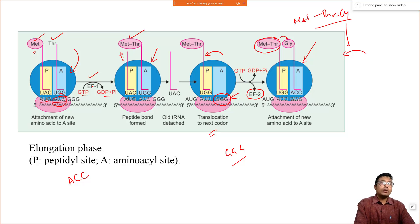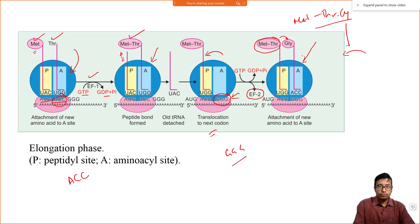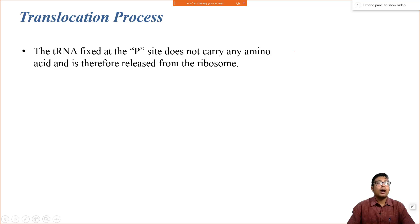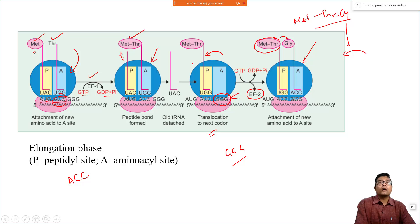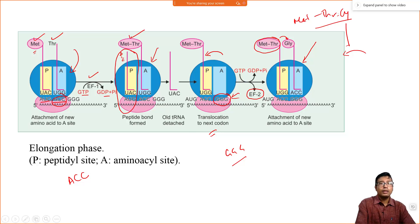The first transfer requires elongation factor 1; subsequent transfers need elongation factor 2. The translocation process: the tRNA fixed at the P site with no amino acid is released from the ribosome. Then the whole ribosome moves over the mRNA through a distance of 3 bases. We call it peptidyl tRNA rather than aminoacyl tRNA because aminoacyl tRNA means only one amino acid, while peptidyl tRNA means a peptide bond has already formed. This peptidyl tRNA is translocated to the P site with the help of EF2.